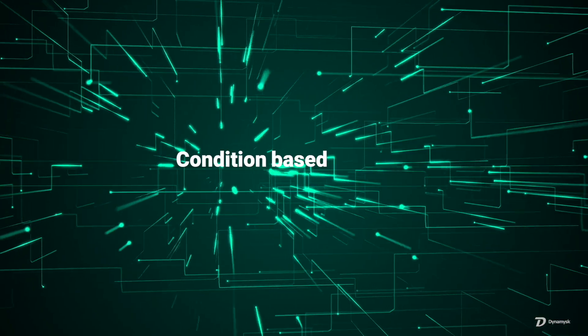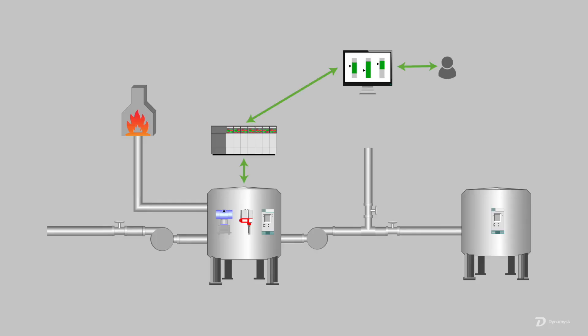How about condition-based controls? Operators are often faced with the same decision paths multiple times in process controls. To control a level in a vessel, for example, they may need to control the inflowing product and the outflowing product. To keep it simple, we'll say the outflowing product has two paths — one is to a flare and the other is to a vessel downstream. As the upstream vessel fills and reaches its optimum operating level, the outflow to the flare begins. When the downstream vessel or process is ready, the operator starts to close the flare control valve and open the control valve to the downstream vessel. It's fairly common in a startup scenario.